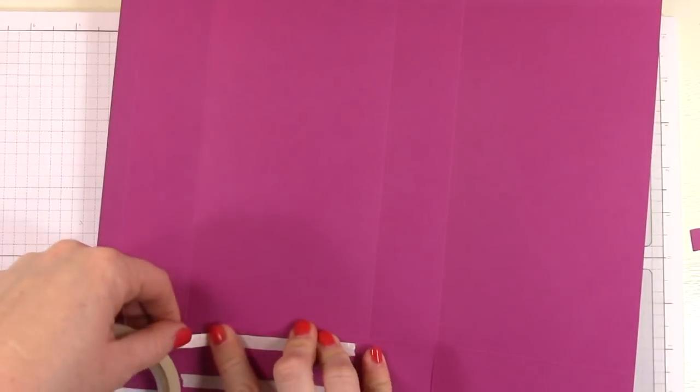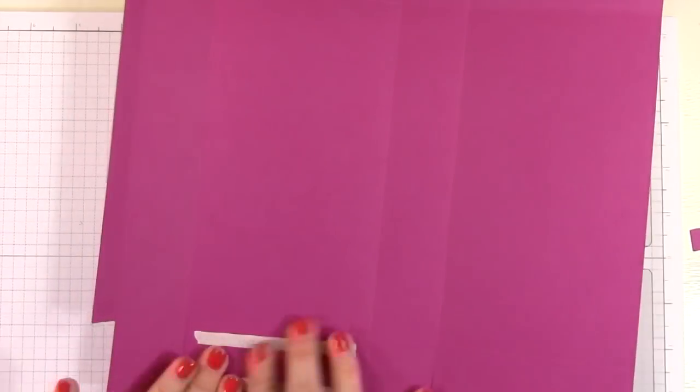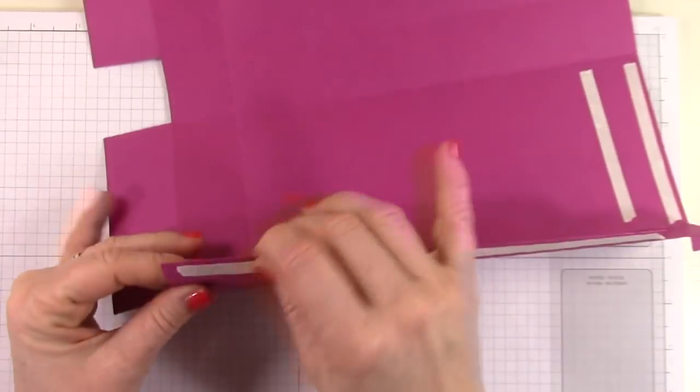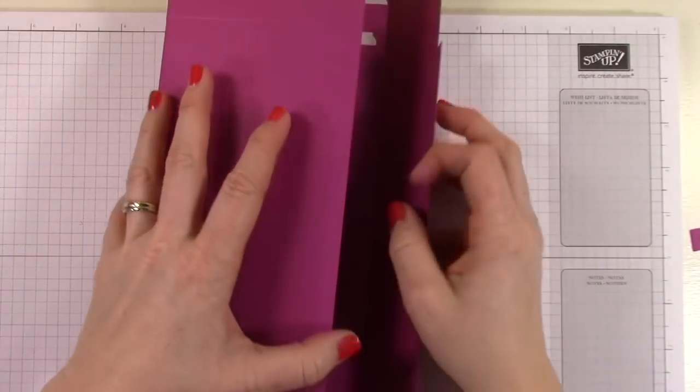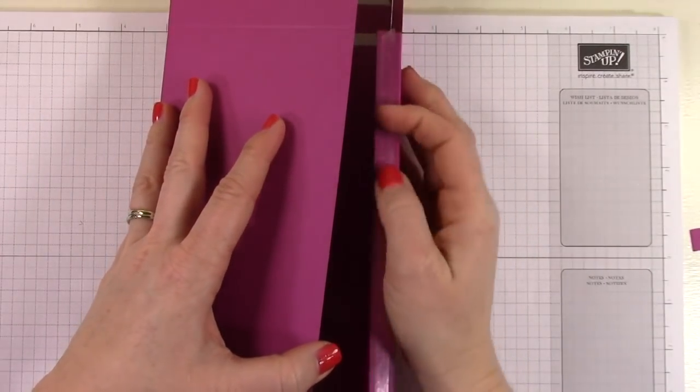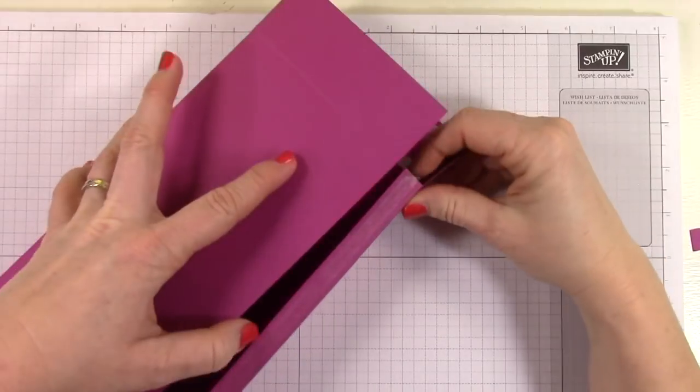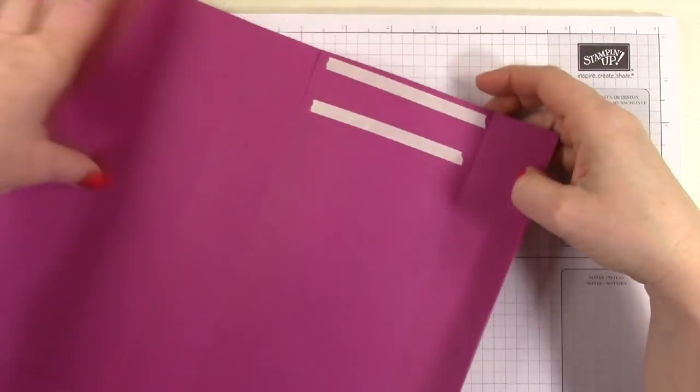We're putting it along that half inch tab and then down here at the bottom on just one of the large flaps that are going to fold up to close the box. Now I chose to put it on that very first flap closest to the half inch score line, because that happens to be the flap that is the front of the box. I like all my seams to face the back of the box.